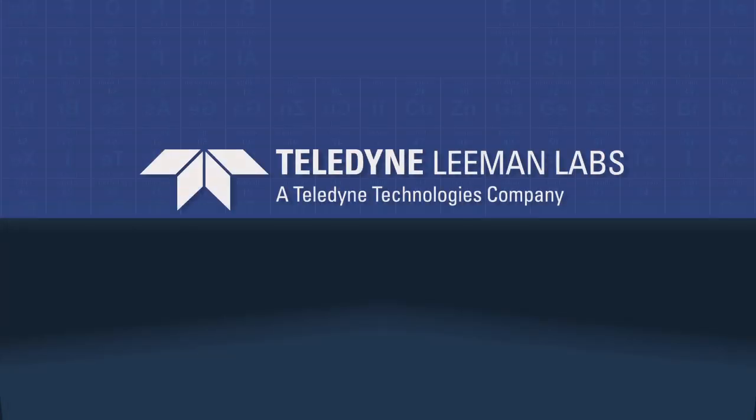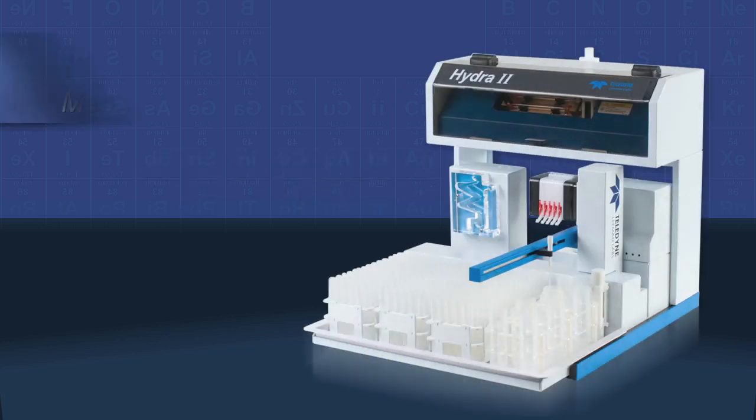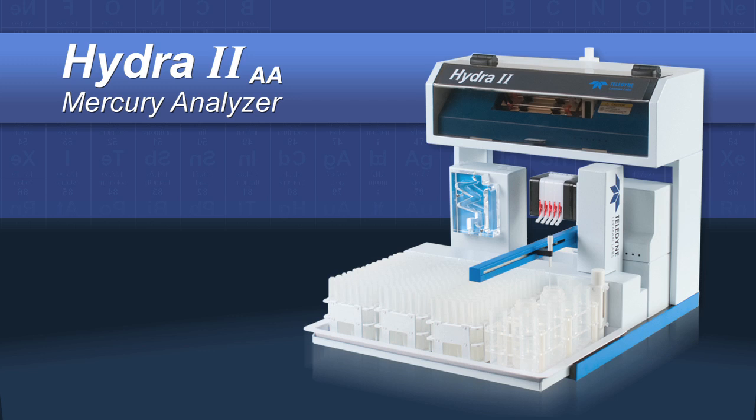Teledyne Lehman Labs has been producing automated mercury analyzers for more than two decades. The Hydra 2 AA is the latest in a new family of mercury products.